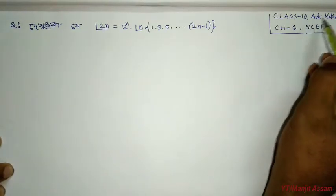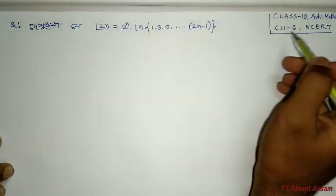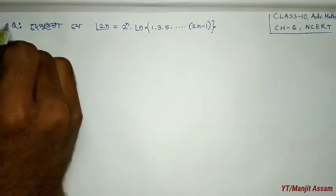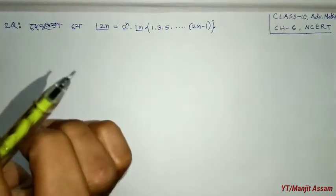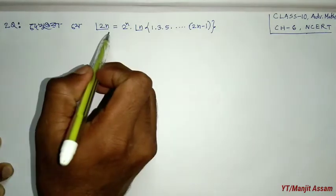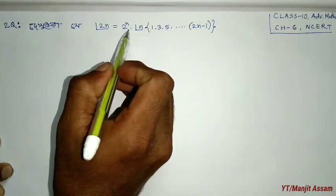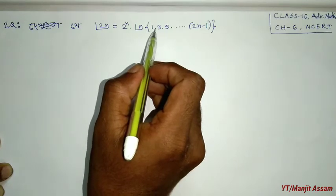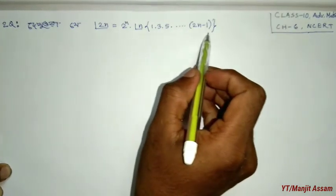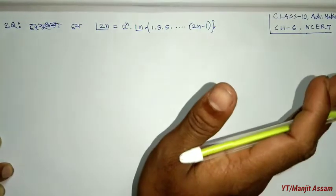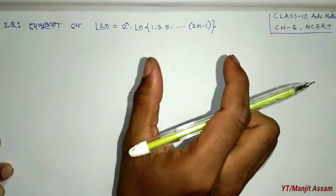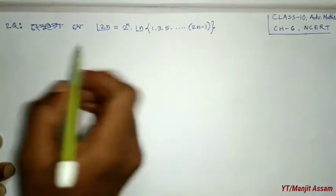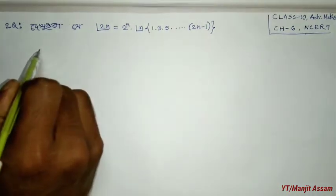As I am discussing in class 10th advance math, question 7 and question number 2: prove that 2n factorial is equal to 2 to the power n into factorial n, into bracket 1 into 3 into 5 into dot dot dot into (2n minus 1). This is an important question, so everyone should do it carefully.